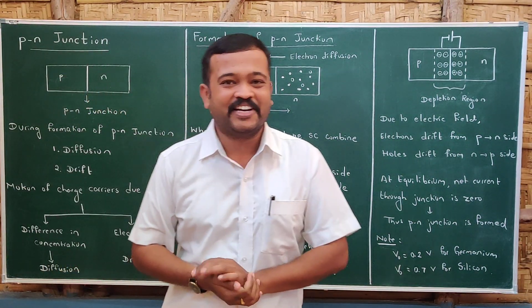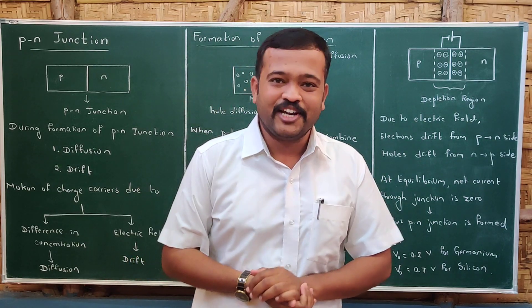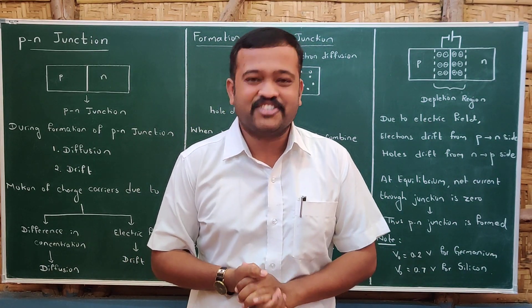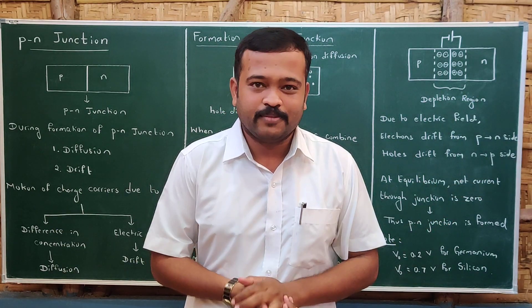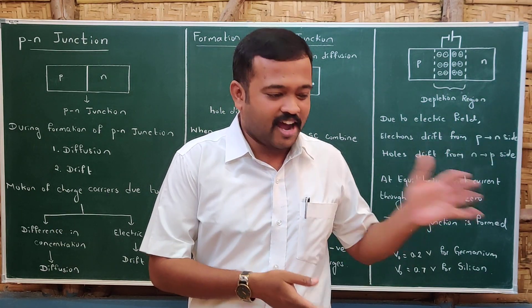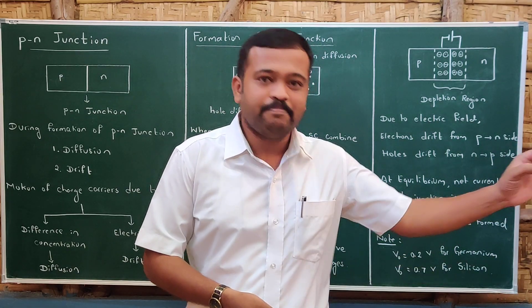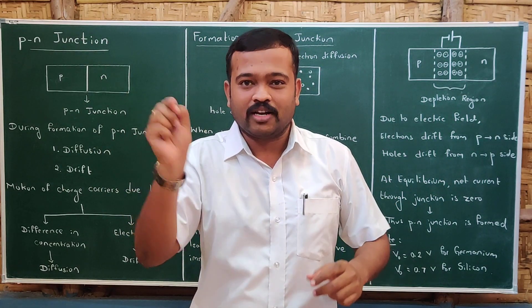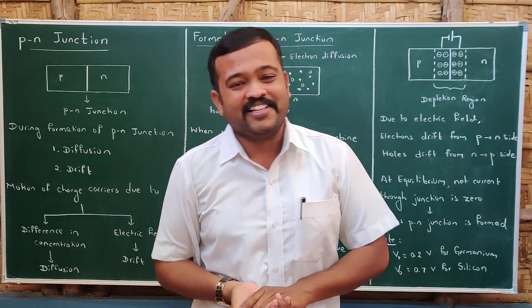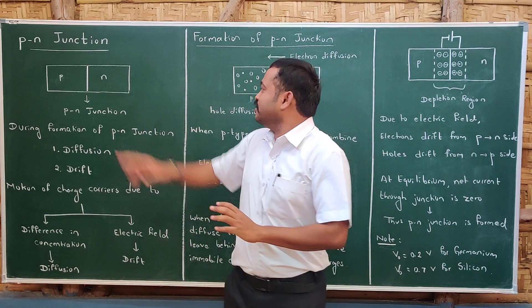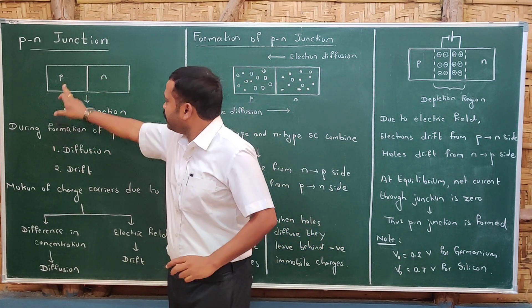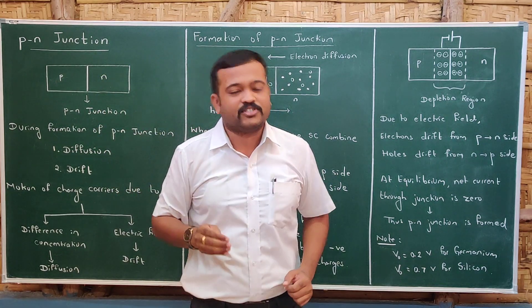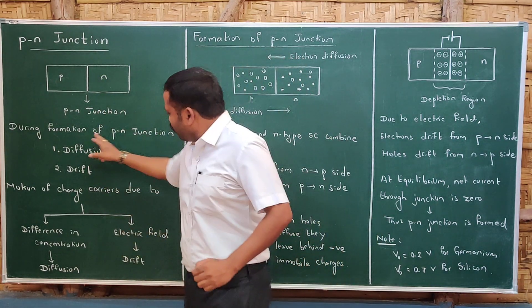Welcome to Part 3 of semiconductors. In this section we will be studying about PN junctions. Semiconductors are classified into two types: intrinsic and extrinsic. Extrinsic semiconductors are again classified into two types: P-type and N-type. If we take a P-type semiconductor and an N-type semiconductor and combine them, what happens? That will be the topic of today's session.